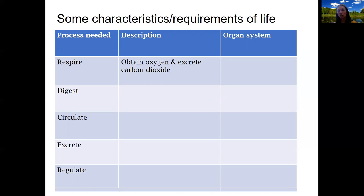Respiration is the exchange of oxygen and carbon dioxide. It's important that carbon dioxide is the waste — it's the product of cellular metabolism that we have to get rid of. Breathing is one way we get rid of carbon dioxide, and we need oxygen for our metabolism to carry out our body processes. So what organ system does this? The respiratory system is involved in respiration. Pause the video and write a description and organ systems for the rest of these.